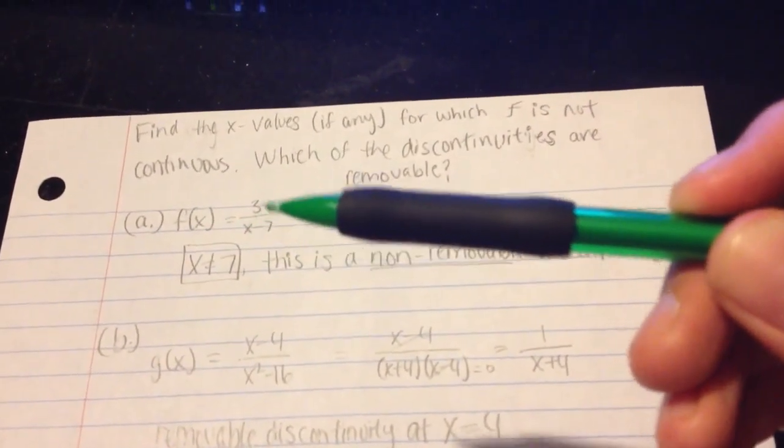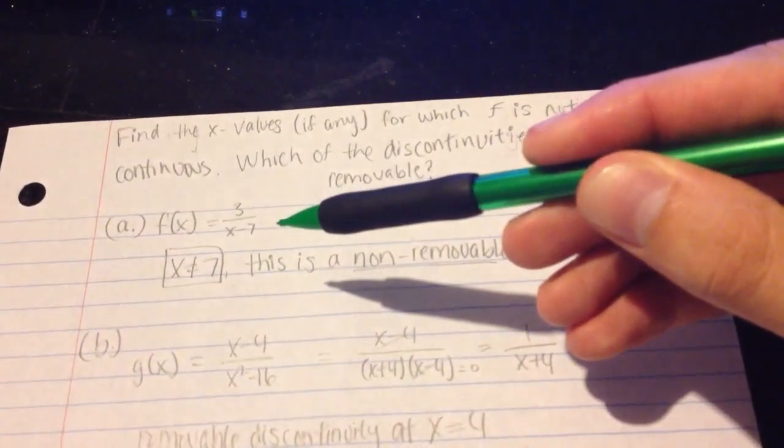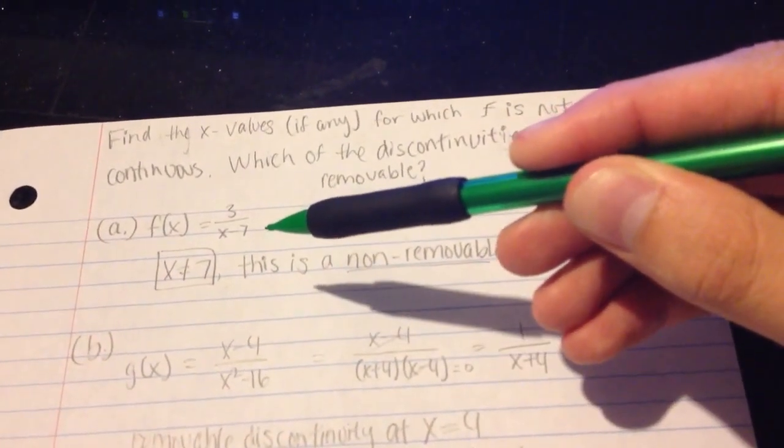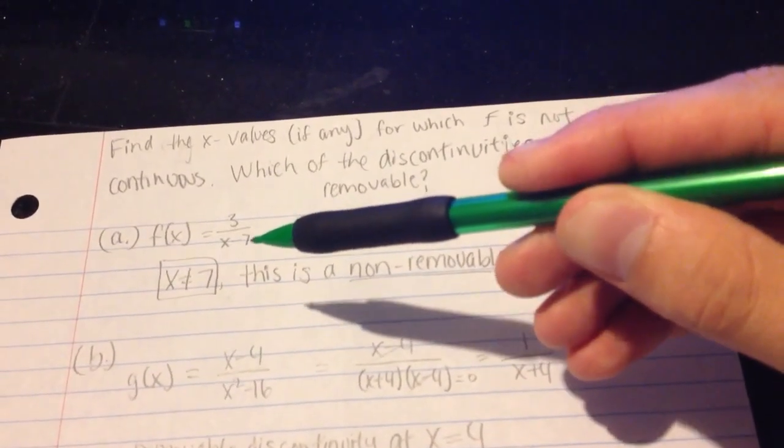f of x is equal to 3 over x minus 7. Now in this case, the denominator just cannot be 0. And that would create a vertical asymptote if there was a value that came and made that 0.